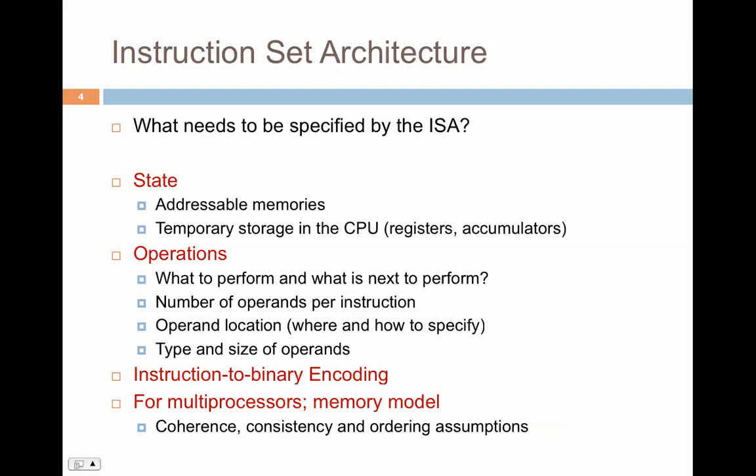To summarize, the instruction set architecture needs to specify: state — addressable memories you can access; temporary storage in CPUs — registers and accumulators, which may include floating-point registers, integer registers, MMX registers for multimedia, and vector processor registers; what operations those registers perform, such as arithmetic and logical operations; the number of operands per instruction, their location, size, and type; encoding and decoding; and as you scale up to multiprocessors, the memory model.